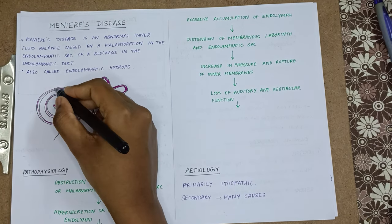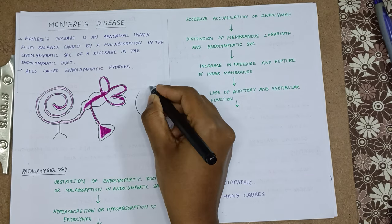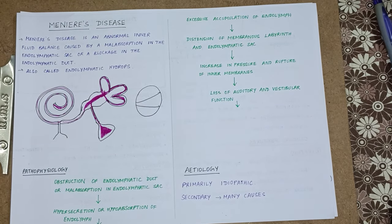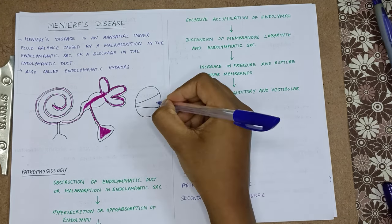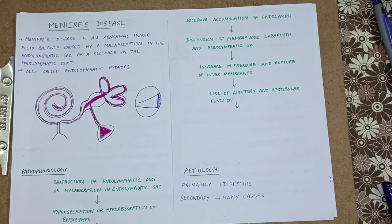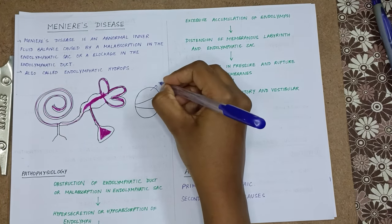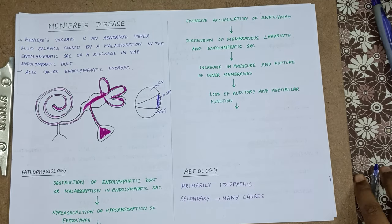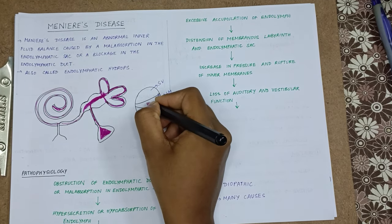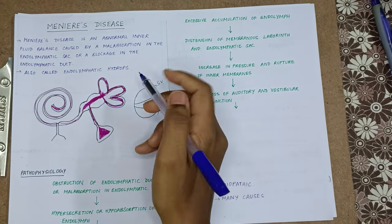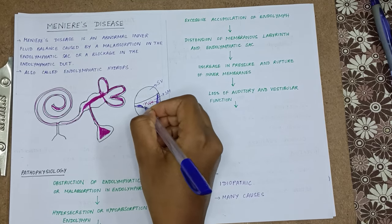Now drawing a cross section at this level, we are going to get three compartments. Here we have stria vascularis, this is scala vestibuli, scala media, and scala tympani. This stria vascularis is going to secrete endolymph into the scala media. We will be having the organ of Corti, which is responsible for hearing.